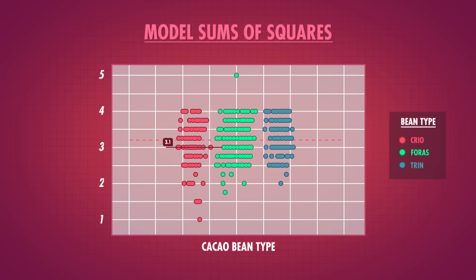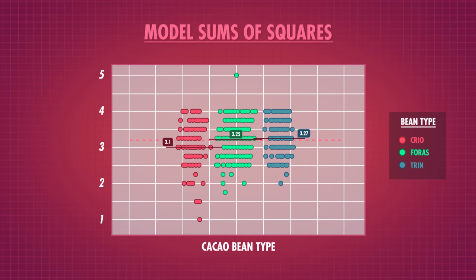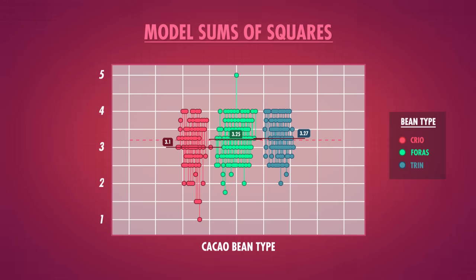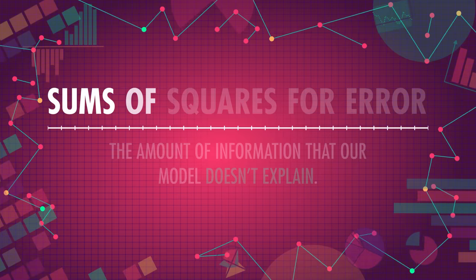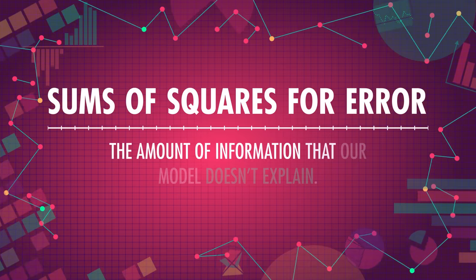For bars made with Criollo beans the group mean is 3.1, Forastero beans 3.25, and Trinitario beans 3.27. We sum up the squared distances between each point and its group mean. This is called our model sums of squares, or SSM, because it's the variation our model explains — in other words, how much variation is accounted for if we assumed each rating were its group mean. We're also going to need the amount of variation the model doesn't explain — how much ratings vary within each group of cocoa beans. So we sum up the squared differences between each data point and its group mean to get our sums of squares for error, SSE.